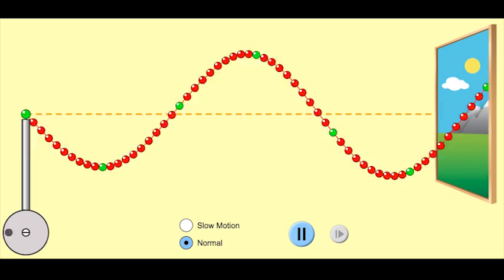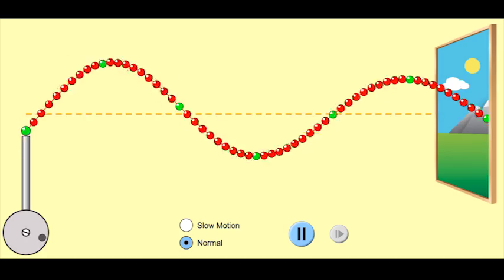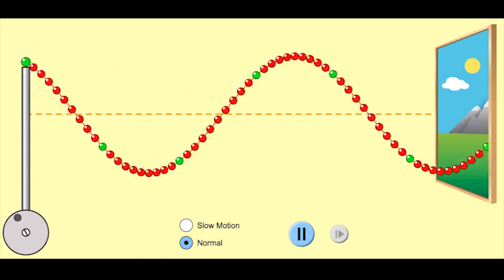If I can change the amplitude, of course the peak gets smaller. But neither the frequency, nor the wavelength, nor the speed changes.